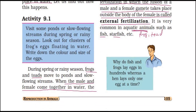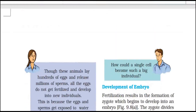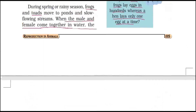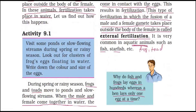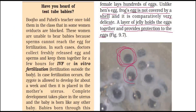Why do fish and frogs lay eggs in hundreds whereas a hen lays only one egg at a time? Think about it. We will continue this study in the next video, where we will also cover the topic of test tube babies.